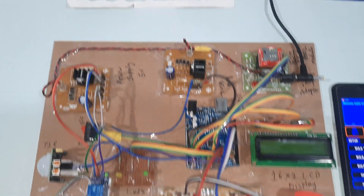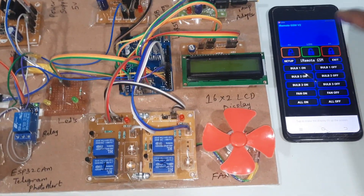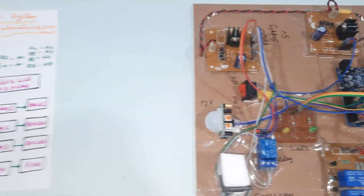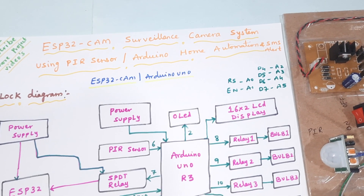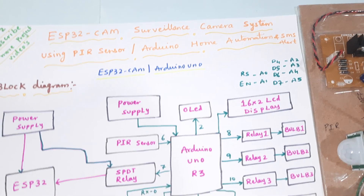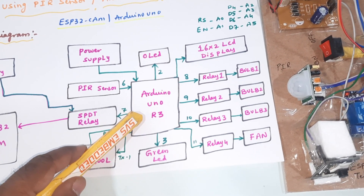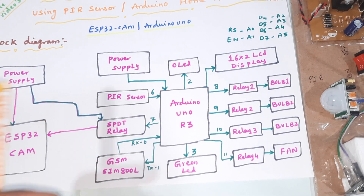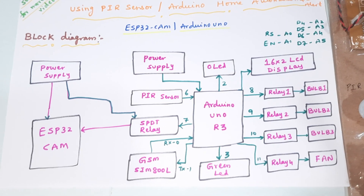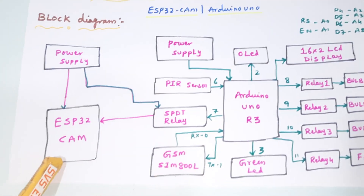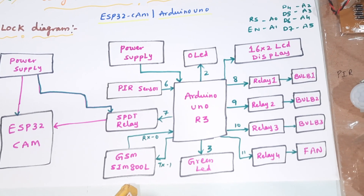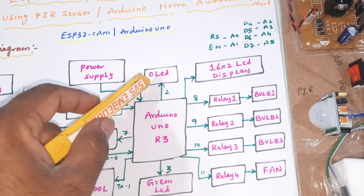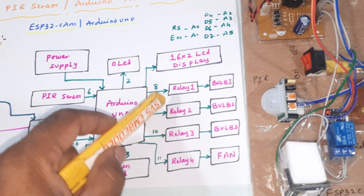Hi, we are from SVS Embedded. The project title is ESP32 Cam Surveillance Camera System using PIR sensor and Arduino home automation. We are using Arduino Uno R3, one PIR sensor, one SPDT relay, ESP32 camera, Telegram photo alert, GSM SIM A10 module, one orange LED, and one green LED.